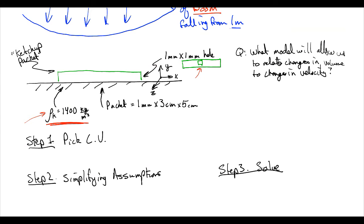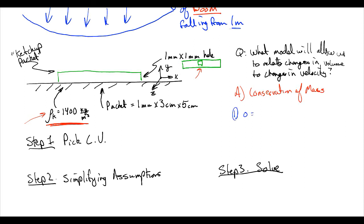All right. So what model will allow us to relate changes in volume to changes in velocity? And the answer is conservation of mass. So our first equation that we're going to write down is: 0 is equal to the d dt of the integral of our control volume of rho dv plus integral of a control surface of rho w dot n hat dA. Great.